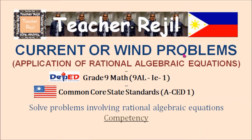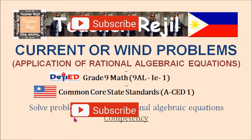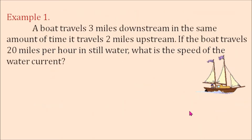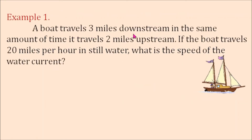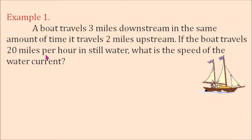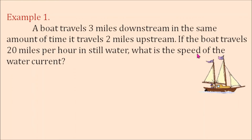Current and wind problems are some of the most notable types of problems that involve rational algebraic equations. Example number one: a boat travels three miles downstream in the same amount of time it travels two miles upstream. If the boat travels 20 miles per hour in still water, what is the speed of the water current?